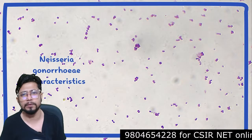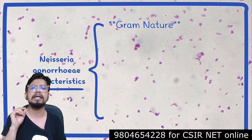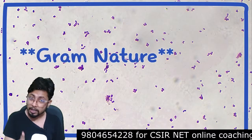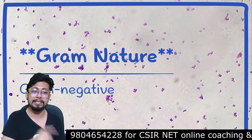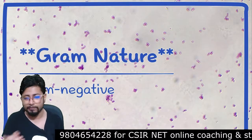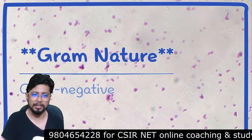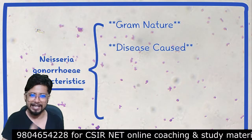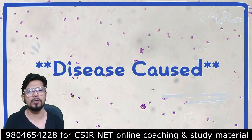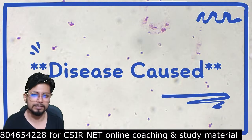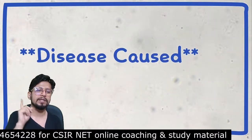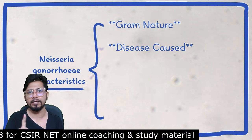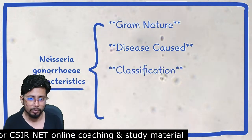The first thing we want to talk about is the gram nature of this bacteria. Neisseria gonorrhoeae is a coccus and it is gram negative in nature — a gram negative coccus, which is quite rare. The disease primarily caused by Neisseria gonorrhoeae is gonorrhea.